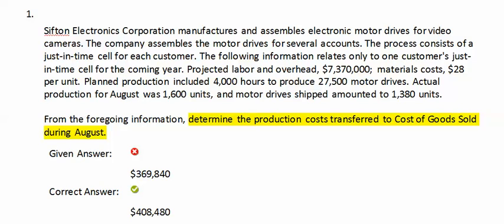Projected labor and overhead is $7,370,000. Material costs $28,000 per unit. Planned production includes 4,000 hours to produce 27,500 motor drives. Actual production for August was 1,600 units, and the motor drives shipped amounted to 1,380 units.